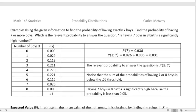Here's an example. Using the given information, find the probability of having exactly seven boys. Find the probability of having seven or more boys. Which is the relevant probability to answer: Is having seven boys in eight births a significantly high number? Here's our distribution, which adds up to one. The probability of seven is 0.026. The probability of seven or more is P(X ≥ 7) = 0.026 + 0.005 = 0.031. The relevant probability to answer whether seven is significant is P(X ≥ 7).